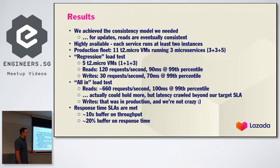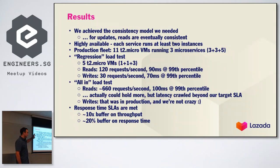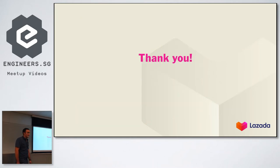As a result, we do have the consistency model we needed. Each service runs in highly available mode so we can restart them at will. Our production fleet is 11 T2 micro instances, and it handles 660 requests per second under 100 milliseconds.